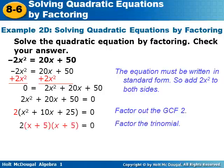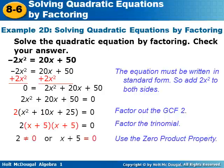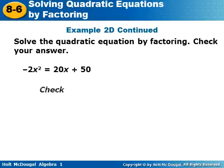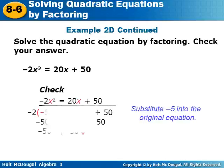We factor the trinomial x² plus 10x plus 25, finding two numbers that multiply to 25 and add to 10 — that's 5 and 5. So we get (x plus 5) times (x plus 5). You may also recognize this as a perfect square trinomial, since x² and 25 are both perfect squares and 2 times x times 5 gives the middle term 10x. Using the zero product property, x plus 5 equals zero, and solving once gives x equals negative 5. Checking by substituting negative 5 gives negative 50 equals negative 50.